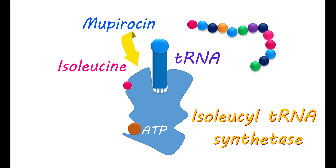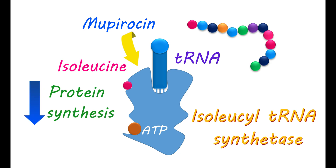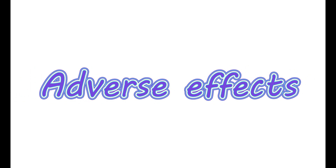Mupiracin inhibits this enzyme, which prevents the transfer of isoleucine. This prevents protein synthesis in bacteria. As proteins are not properly formed, the growth of bacteria is inhibited. Therefore, when Mupiracin is applied topically, it inhibits bacterial infections. Now let's focus on adverse effects produced by Mupiracin.